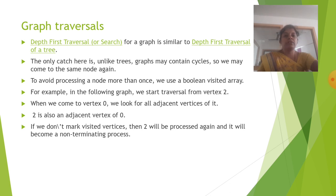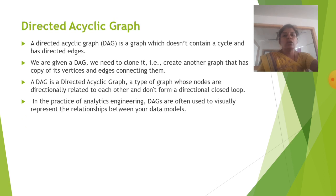We use boolean visited array. When we come to vertex 0, we look at all the adjacent vertices of it. So 2 is also an adjacent vertex of 0. If we don't mark visited vertices, then 2 will be processed again and it will become a non-terminating process.